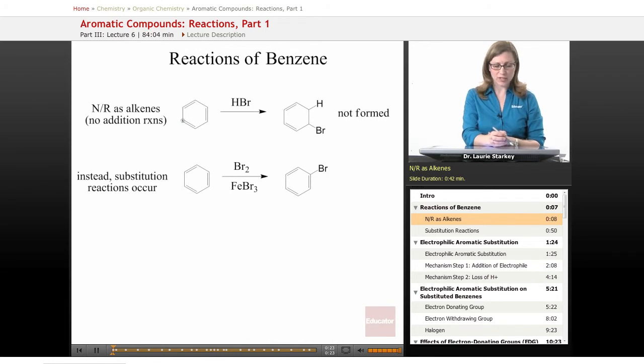So for an alkene, we saw that you could do an addition reaction where you break the pi bond. If you were to react with HBr for example, you break the pi bond, you add a hydrogen and a bromine across the pi bond. Well this reaction does not happen. This is not formed.